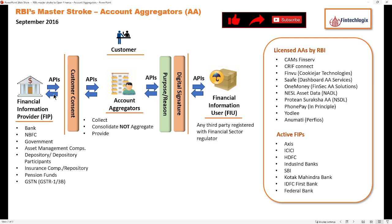All communications happen in the form of APIs — with customer consent, a specific purpose or reason why a certain FIU needs this information, what information piece is needed, and with a digital signature. That means data is in encrypted format when it is passed from FIPs to FIUs.